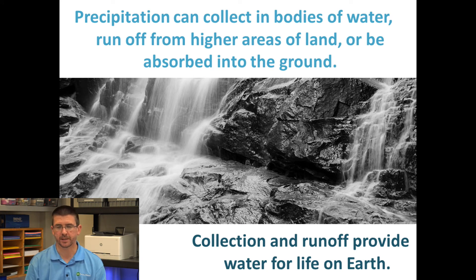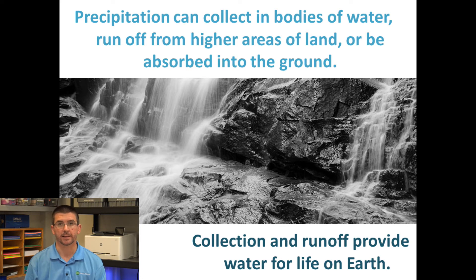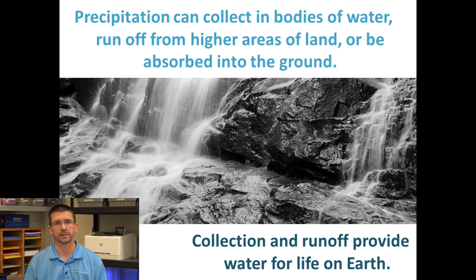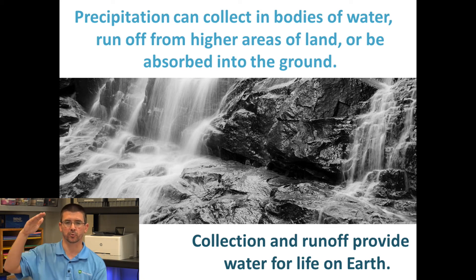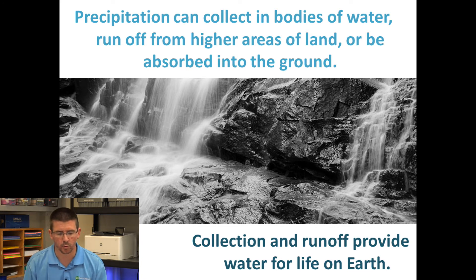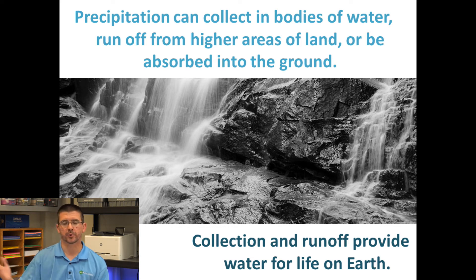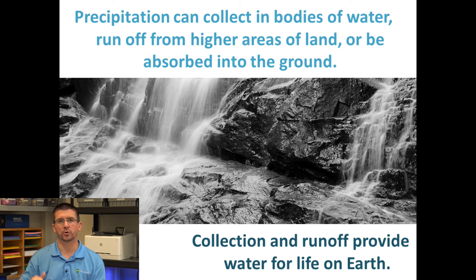Once the precipitation falls back to Earth, it can do a couple of different things. It can collect in bodies of water — land in a lake, a river, or the ocean, and add more water back to replace what was lost through evaporation. But water can also collect in the ground, in what we call groundwater. If it rains on the soil, the water soaks into the ground and makes its way down to pockets of water beneath Earth's surface where it can collect.